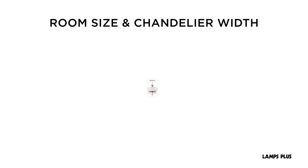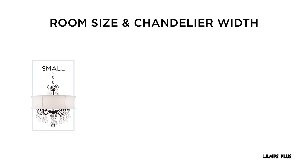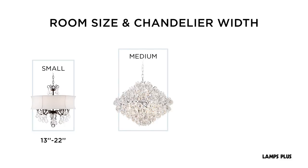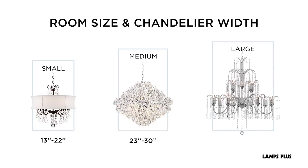For a small room, consider a chandelier size that is 13 to 22 inches wide. If you have a medium-sized room, select a chandelier that is 23 to 30 inches wide. And if you have a large room, look for a chandelier that is 31 inches wide or larger.